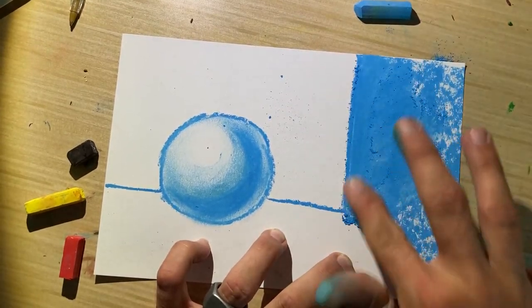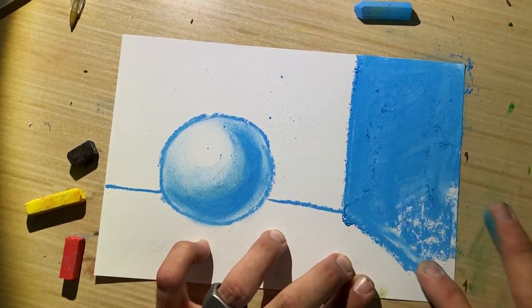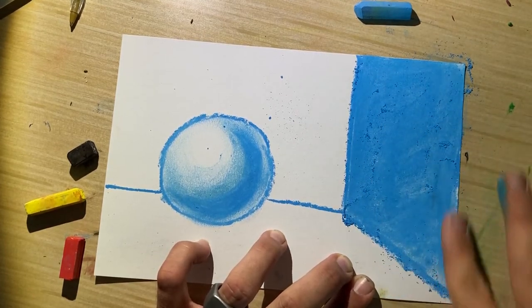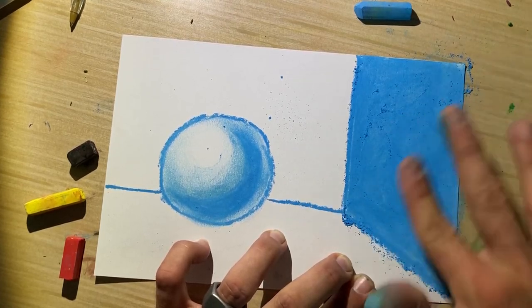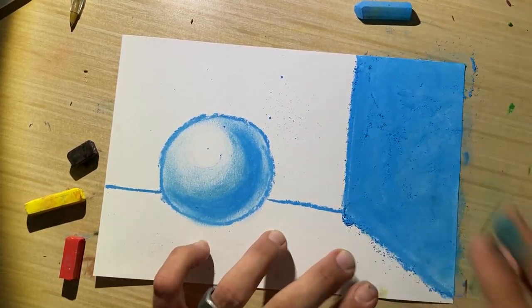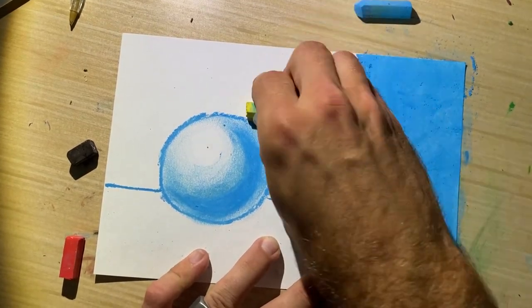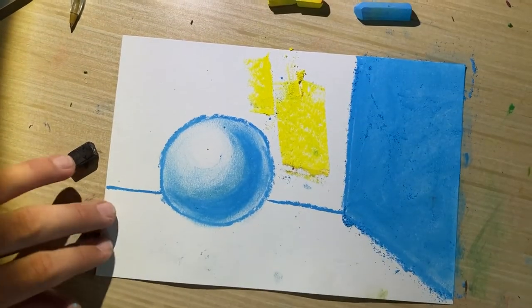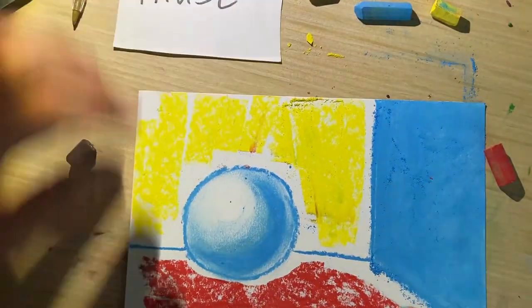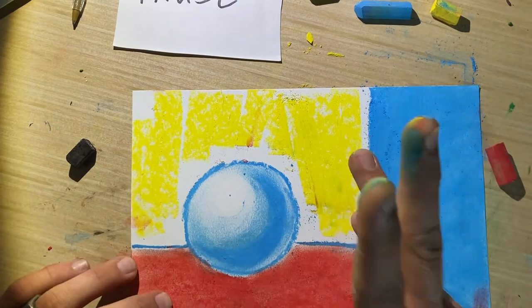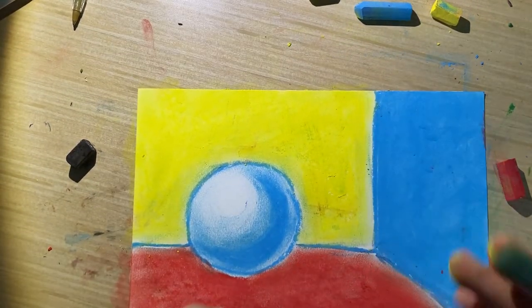Chalk pastel is fantastic for making nice smooth fields of color. So I'll just shade that in smoothly. And I also emphasize if it's a little blotchy, you can always add more pastel. Then we're going to shade the back yellow. I'm going to shade the bottom red. Our walls are shaded now.